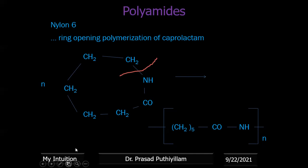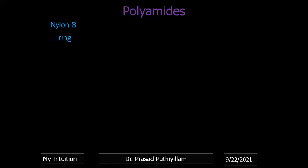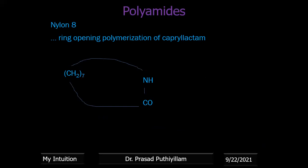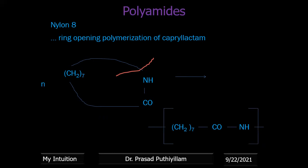Similarly, nylon 8 is prepared by ring opening polymerization of caprylactam — the ring structure has 7 CH2 groups connected to CO-NH, giving 8 carbon atoms. The same ring opening polymerization reaction gives nylon 8 as the corresponding polymer.